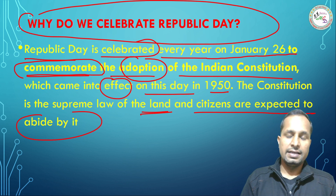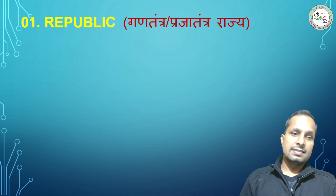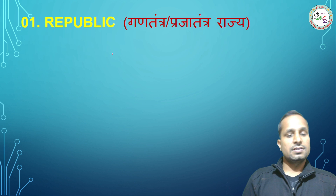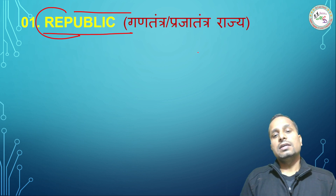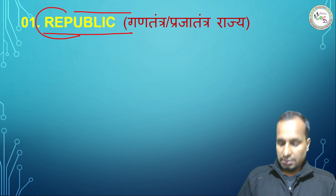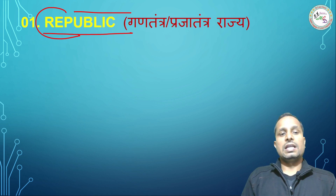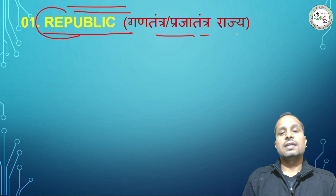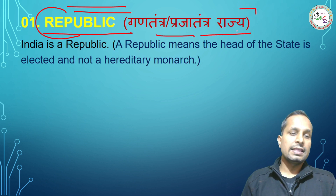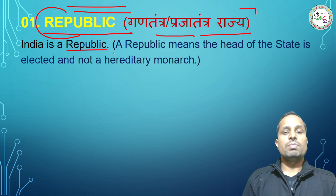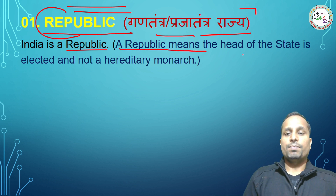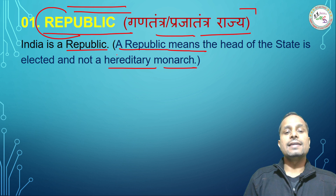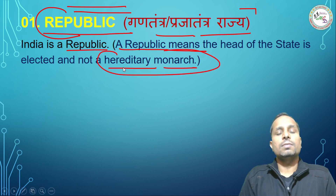I hope you understood. Now let's get started. The first word is 'Republic.' Republic means India is a प्रजातंत्र राज — a republic. In a republic, the head of the state is elected and not a hereditary monarch.